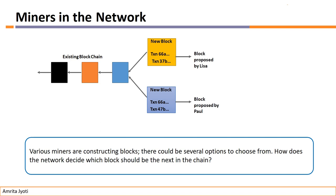Now there is a practical problem: it's not the case that there is only one miner. Any node can play the role of a miner. So at one time, many miners could be constructing blocks simultaneously. Various miners are constructing blocks — there could be several options to choose from. How does the network decide which block should be next in the chain? If many miners are all creating blocks, which miner's block do we choose? Which miner's block gets hashing provided and gets added to the blockchain?